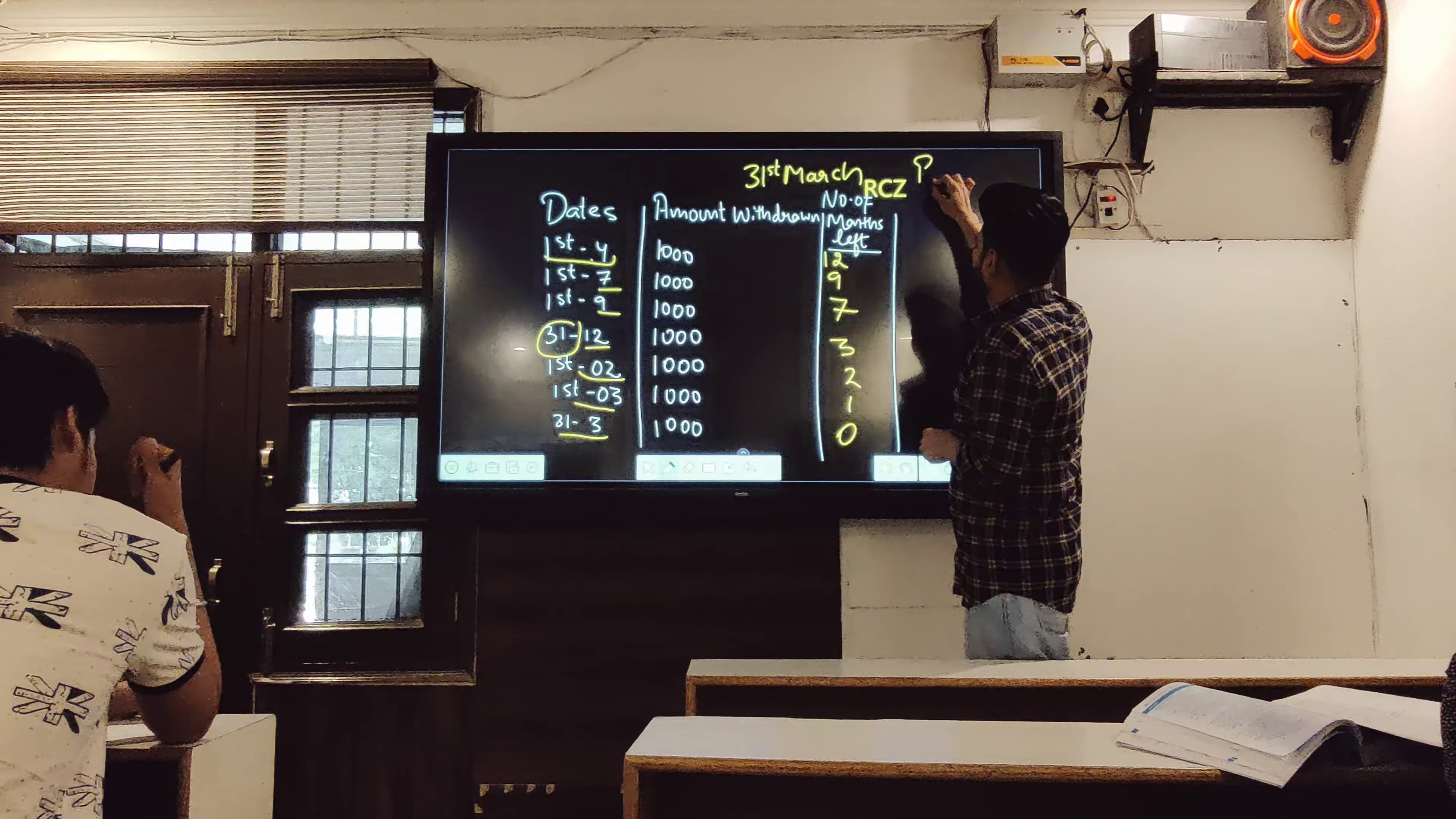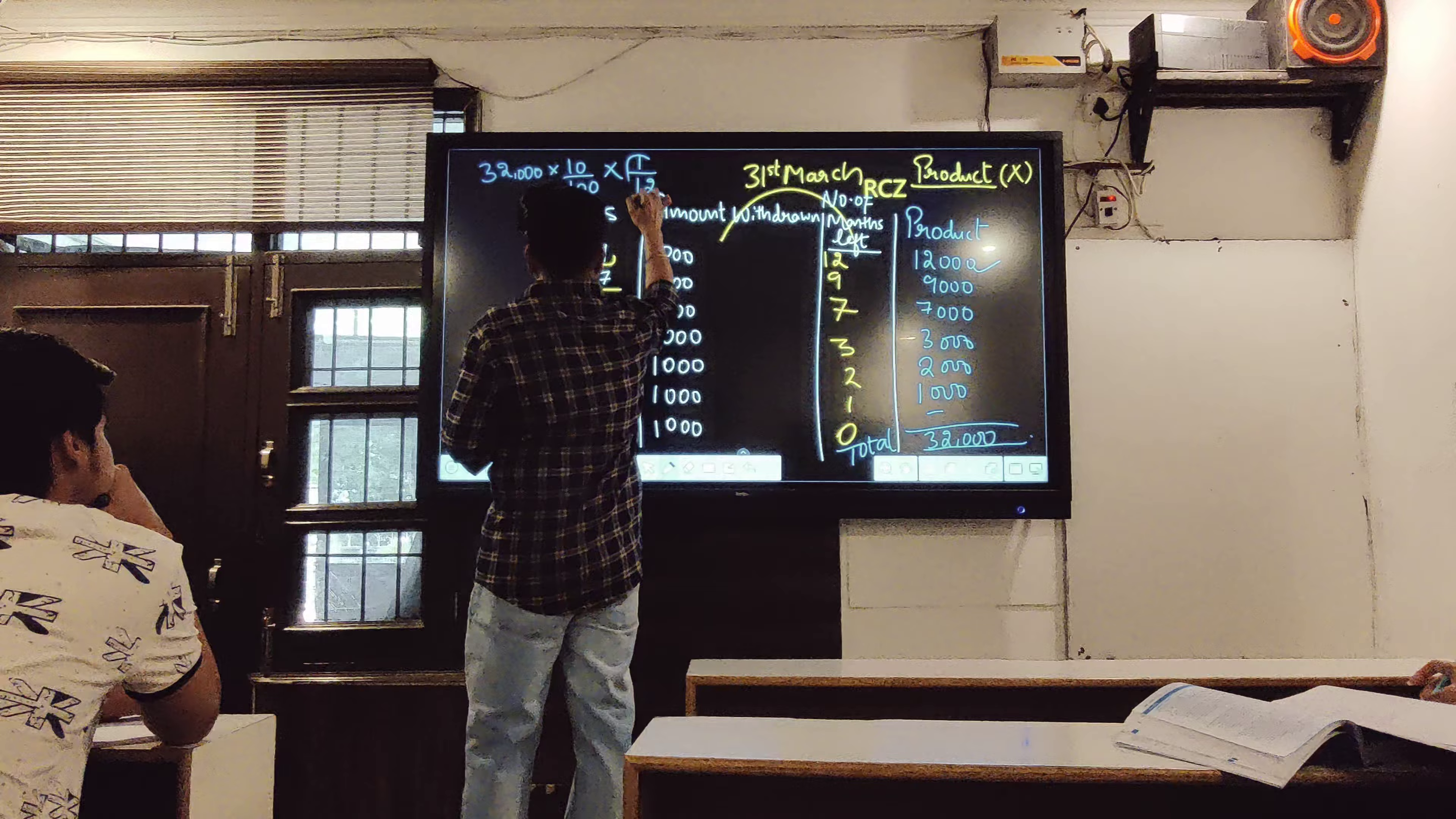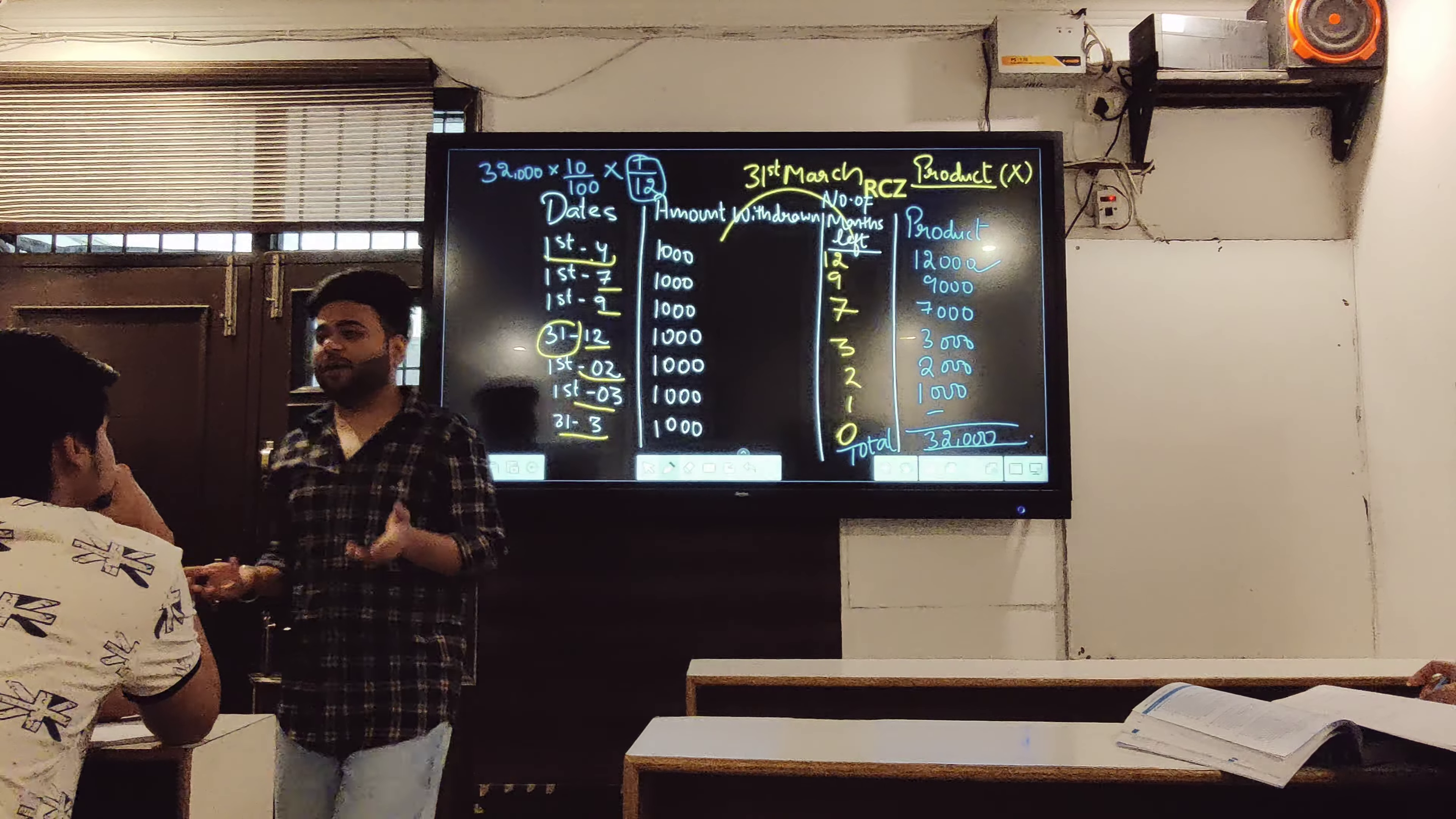Now this method is called product method. Product means multiply. So multiply these two numbers. 12 and 1000 is 12,000. Next 9,000. Next 7,000. Next 2,000. Next 1,000. And last 1,000. Total of this is 32,000.